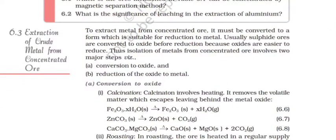Extraction of crude metal from concentrated ore. To extract metal from concentrated ore, it must be converted to a form which is suitable for reduction to metal. Usually, sulfide ores are converted to oxide before reduction because oxides are easier to reduce. Thus, isolation of metals from concentrated ore involves two major steps: Conversion to oxide and reduction of oxide to metal.